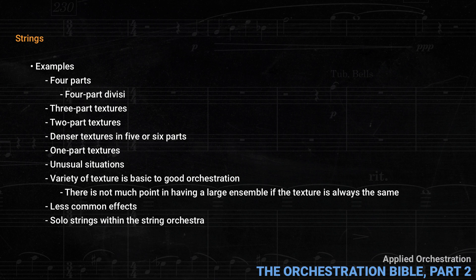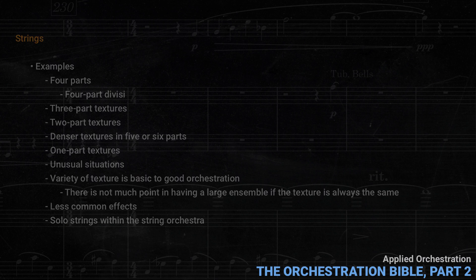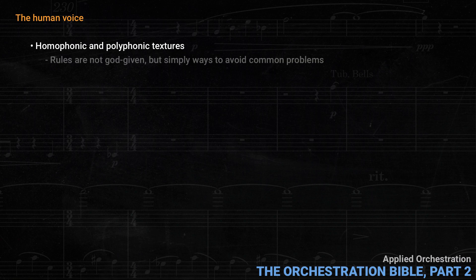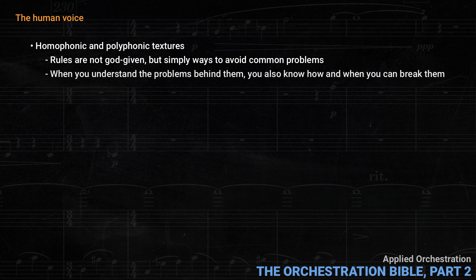Even if you don't read French, it can be useful to look at the examples. Having gone through the strings, Koechlin next turns to the human voice. A student who studied classical harmony will be accustomed to four-voice homophonic and polyphonic textures, but there are so many other possible ways to use voices in groups. Koechlin also wrote excellent counterpoint and harmony textbooks. One of the first things he discusses is situations where the rules students have learned in those areas don't apply. Rules aren't God-given, but simply ways to avoid common problems. When you understand the problems behind them, you also know how and when you can break the rules.